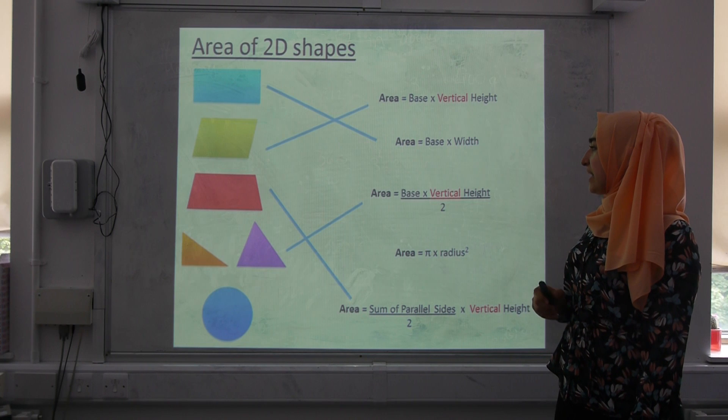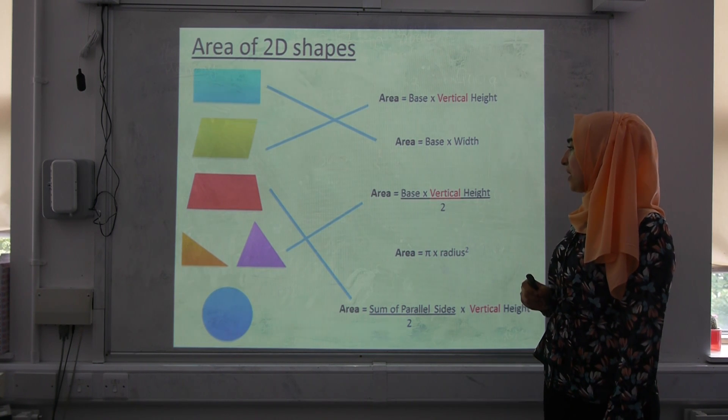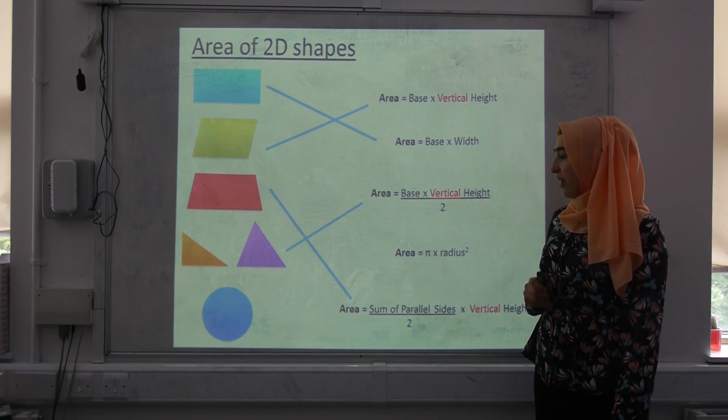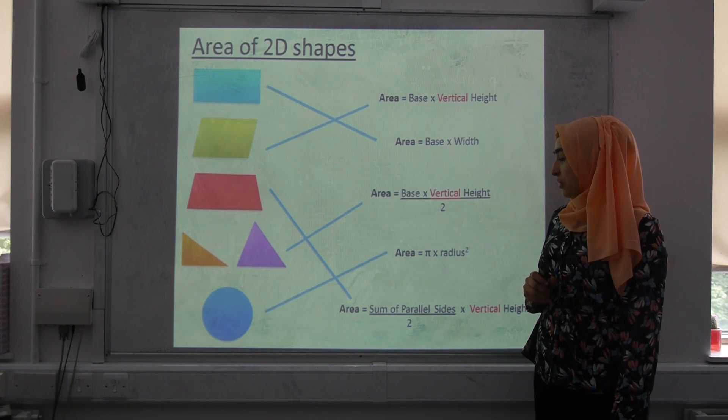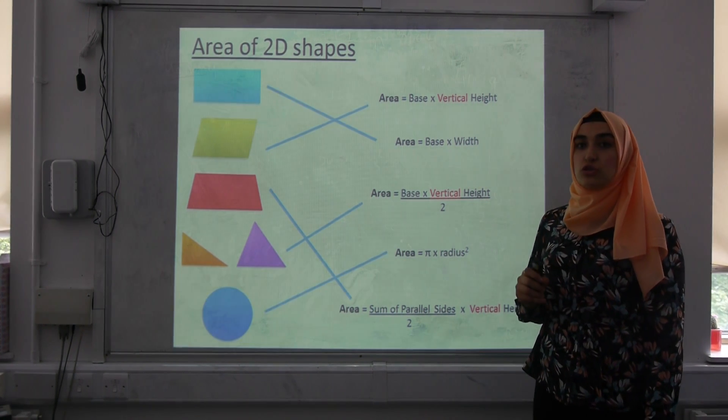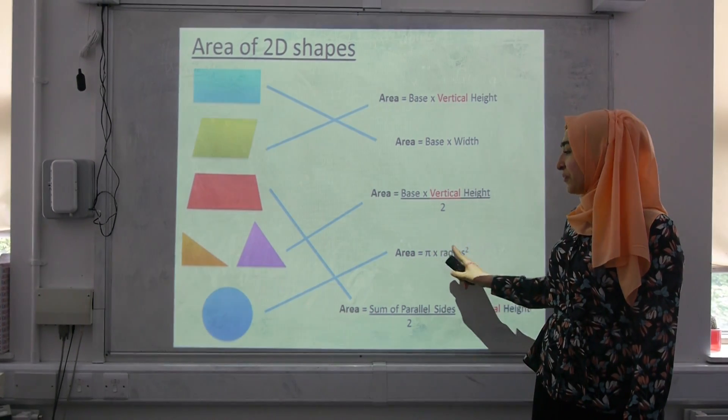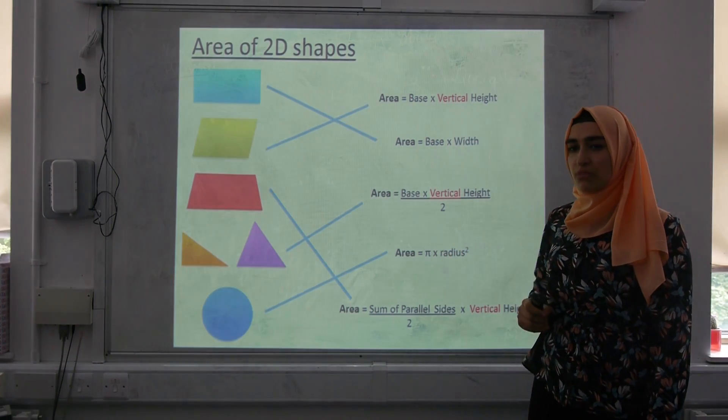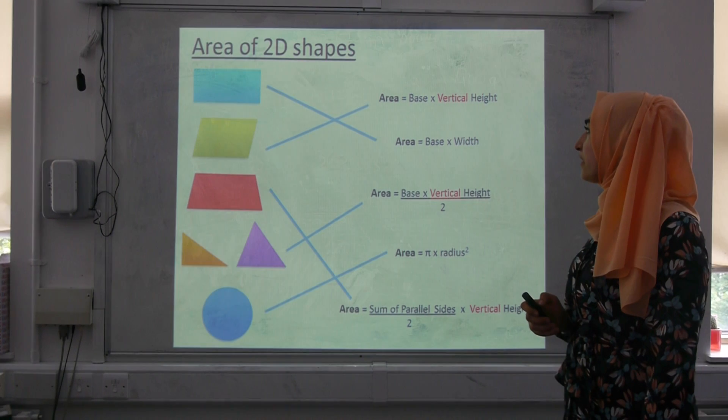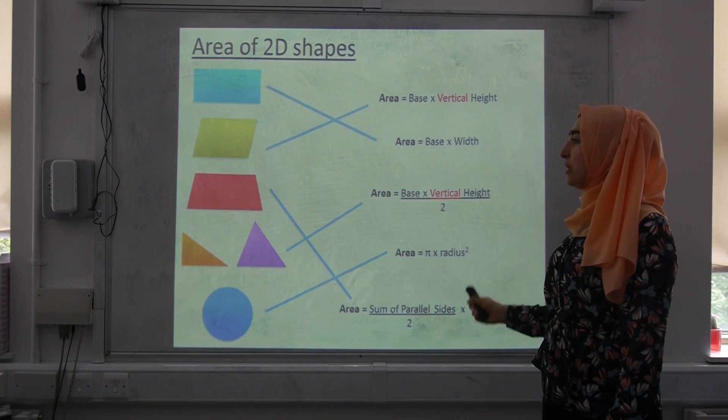Area of a triangle is equal to base times vertical height divided by two. And finally, for a circle, the area is equal to pi times radius squared. Again, please label the radius on that circle. Hopefully you've got that all right. You should already be familiar with this.